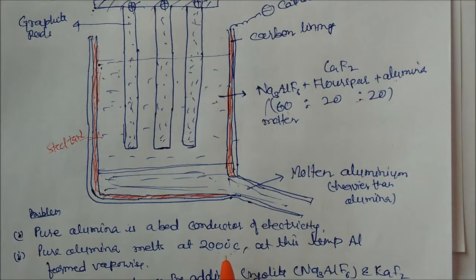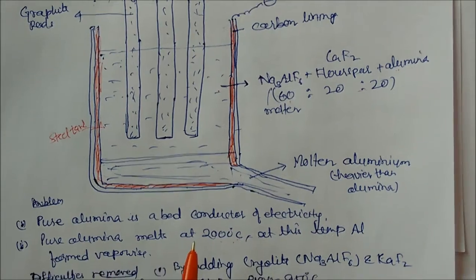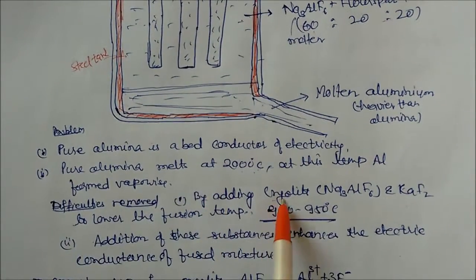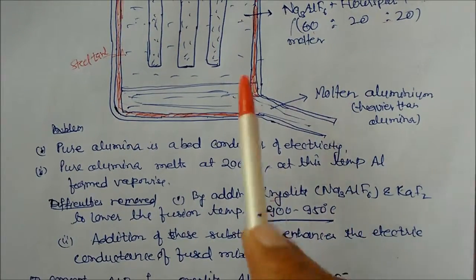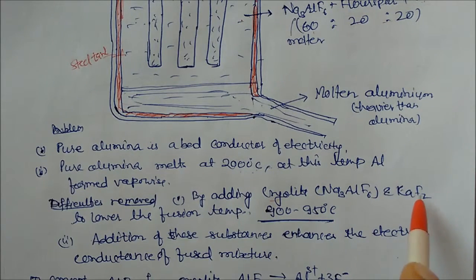So we have to decrease this temperature. So to decrease this temperature, what we are doing? We are adding cryolite, Na3AlF6, and calcium fluorite, fluorspar. It will decrease the temperature to 900 to 950 degree centigrade.